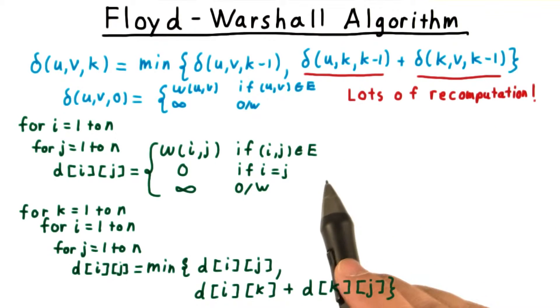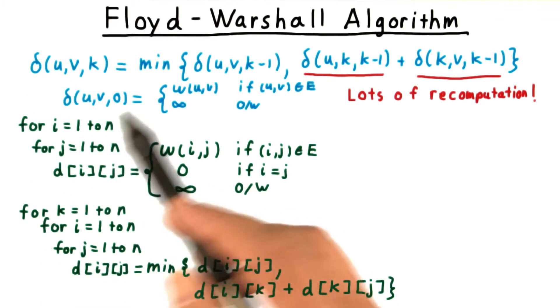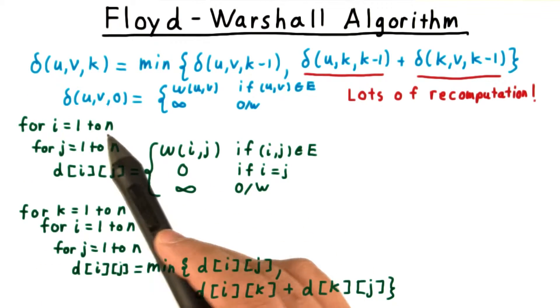As you might have guessed, we're going to fill out a table. The subproblems here have three indices, but thankfully only two will be required for us in the algorithm.